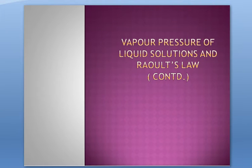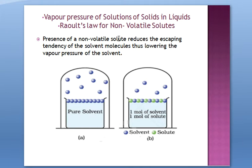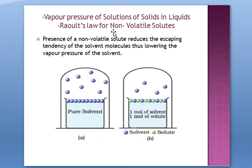We continue with vapor pressure of liquid solutions and Raoult's Law. Vapor pressure of liquid solutions are solutions in which the solvent is a liquid. We already covered Raoult's Law for volatile solutes. Now we are doing Raoult's Law for non-volatile solutes — this is the vapor pressure of solutions of solids in liquids. The solvent remains the liquid, but the solute is a solid, which is why this is Raoult's Law for non-volatile solutes.